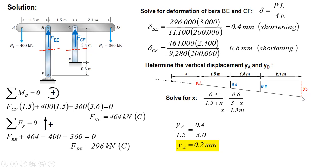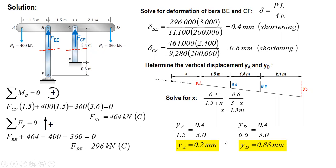Next, for YD: YD / (2.1 + 1.5 + 1.5 + 1.5) = 0.4 / (1.5 + 1.5), so YD / 6.6 = 0.4 / 3. Solving, YD is 0.88 mm. That's the answer for this problem. Thank you for watching.